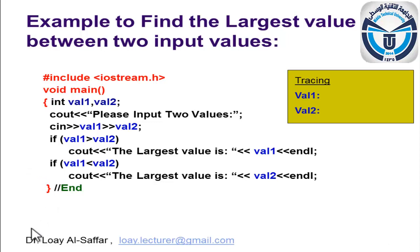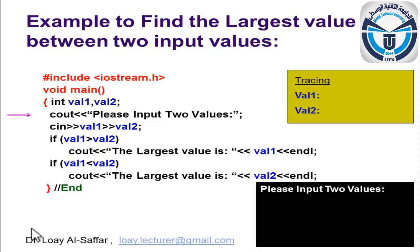Let's take an example. If you want to find the largest value between two input values, you need first to input the two values. We need to declare two variables of type integer. A statement will be displayed for the user to inform him to input the two values, and the cin statement will be used to read them. For example, the values three and seven — val one will be a named memory location for value three, and val two will be a named memory location for value seven.